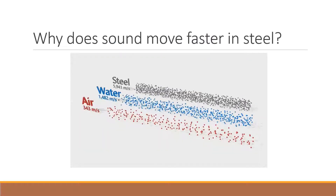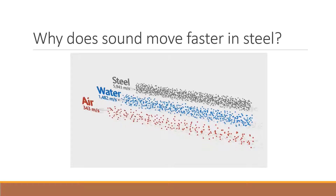Here we've got air, water, and steel, with the speed of sound listed under each. The speed of sound is how quickly sound travels. Imagine a pipe running underwater — the pipe contains air — and you hit that pipe with a wrench. Is the sound going to move faster through the water, through the steel of the pipe, or through the air inside the pipe? Well, judging by the values, it's going to move fastest through the steel at almost 6,000 metres per second, compared to about 1,500 metres per second through water and about 343 metres per second through air.